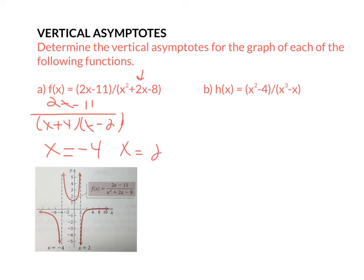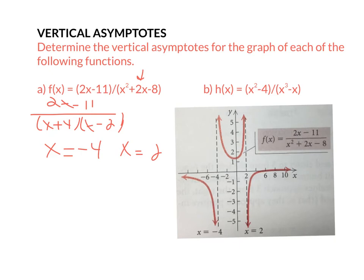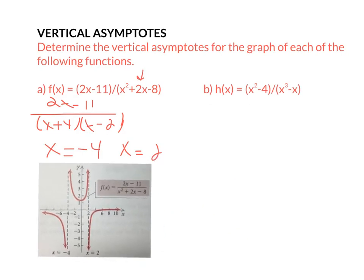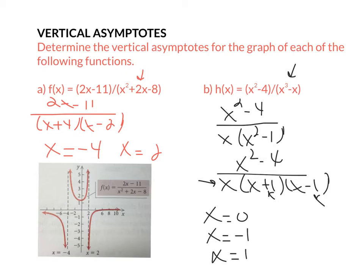I actually took a picture of this graph — there's an asymptote going through negative four and an asymptote going through positive two, vertical. That's what the graph of that one looks like. For this other one, I'm not worried about the top at all for vertical — I'm just worried about the denominator. On this denominator, I'm going to factor out an x, because that's what they have in common. That leaves me x squared minus one, which is a difference of squares, so I factor a little more: x times x plus one times x minus one. So my vertical asymptotes are x equals zero, x equals negative one, and x equals positive one — three vertical asymptotes.